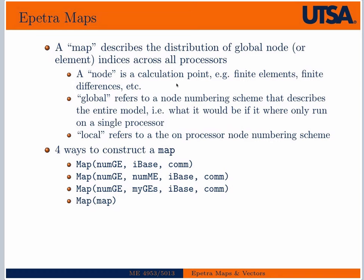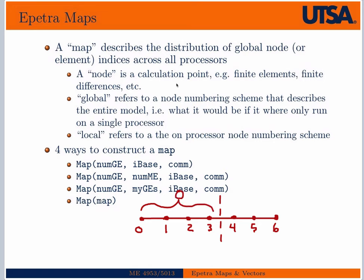An example of that might be: if you had a one-dimensional bar that you broke up into some discrete points for computational purposes, and the global numbering of those went zero, one, two, three, four, five, six — and then say we split this up across multiple processors.